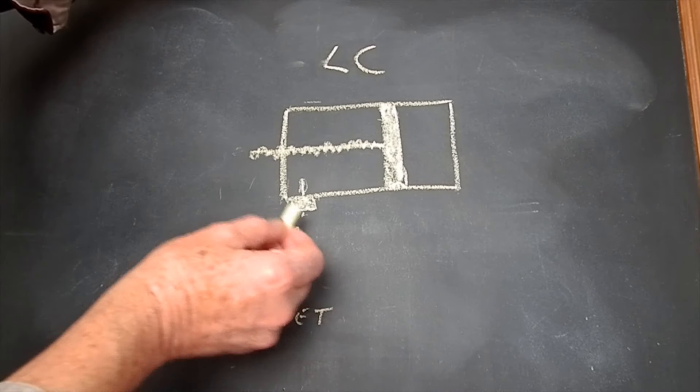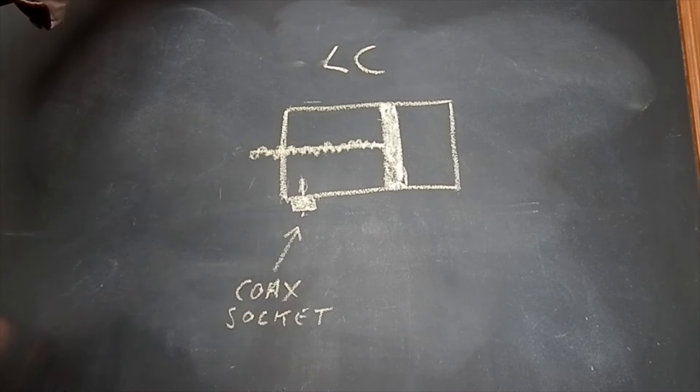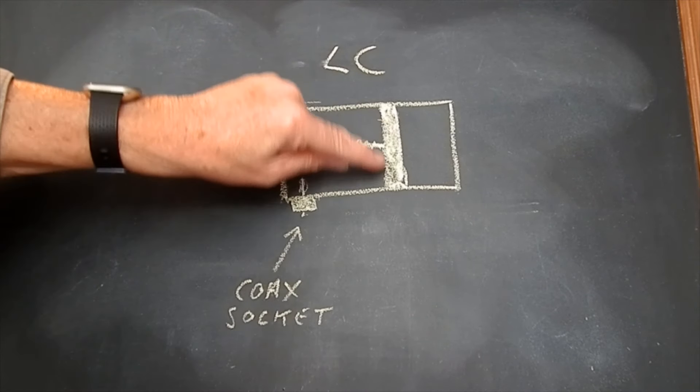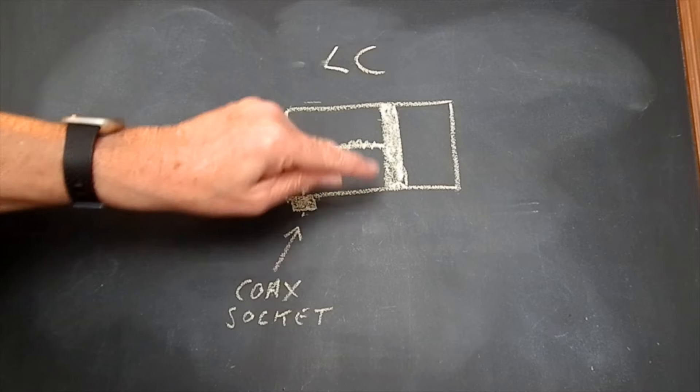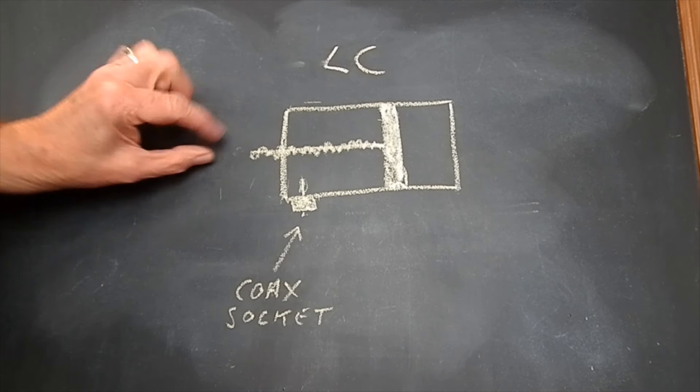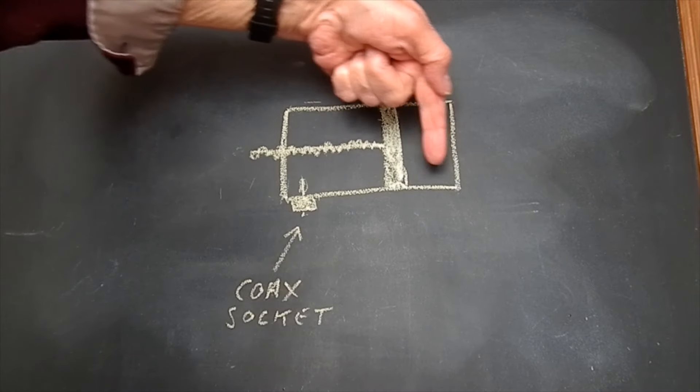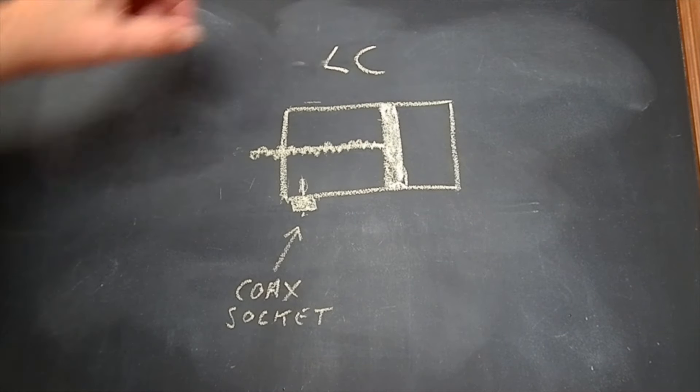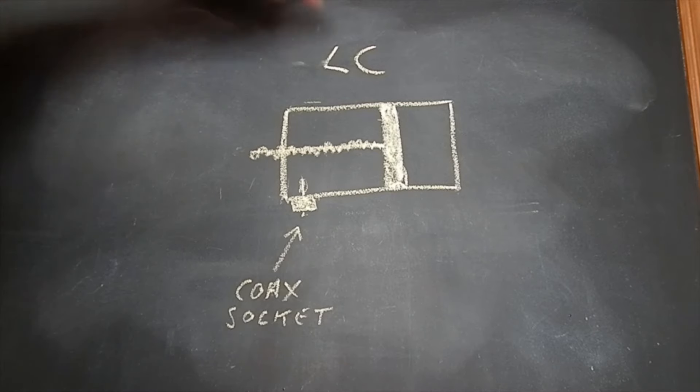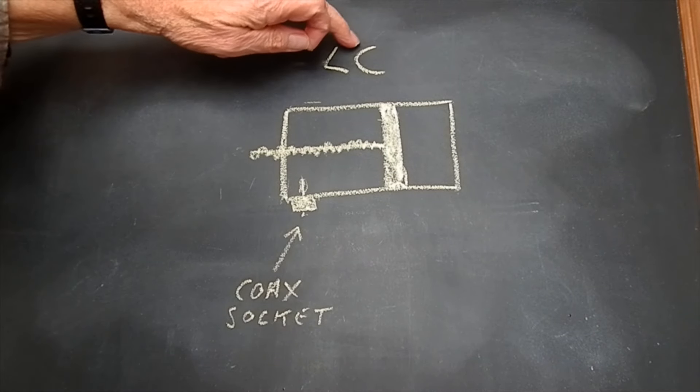A little sniffer aerial inside there. This is a top hat, it's a capacity hat if you like. This is a threaded rod here and you adjust this to move this in and out of the cavity. So you can adjust that threaded rod like that. This basically is an LC circuit, a mechanical LC circuit.